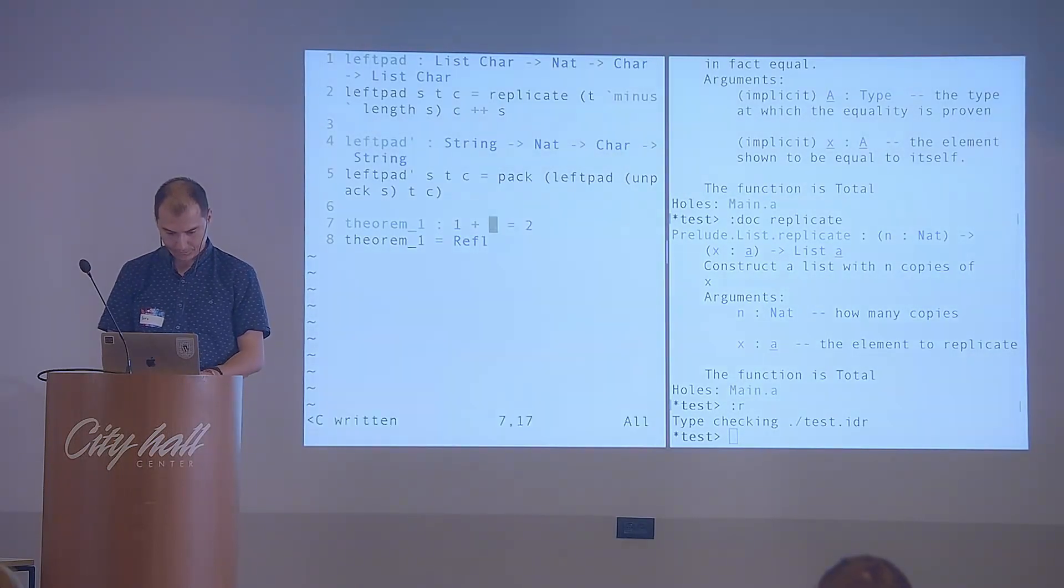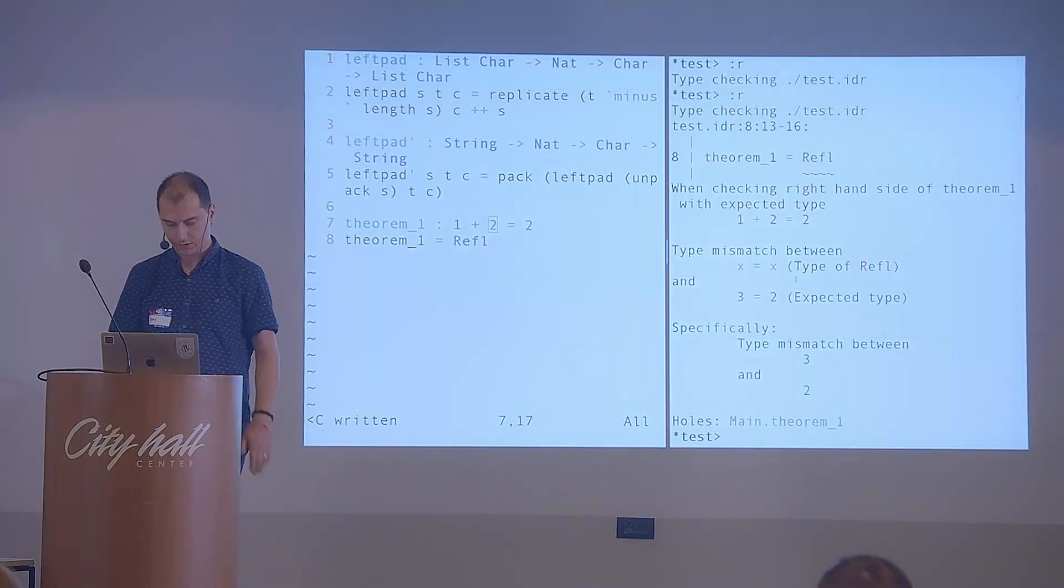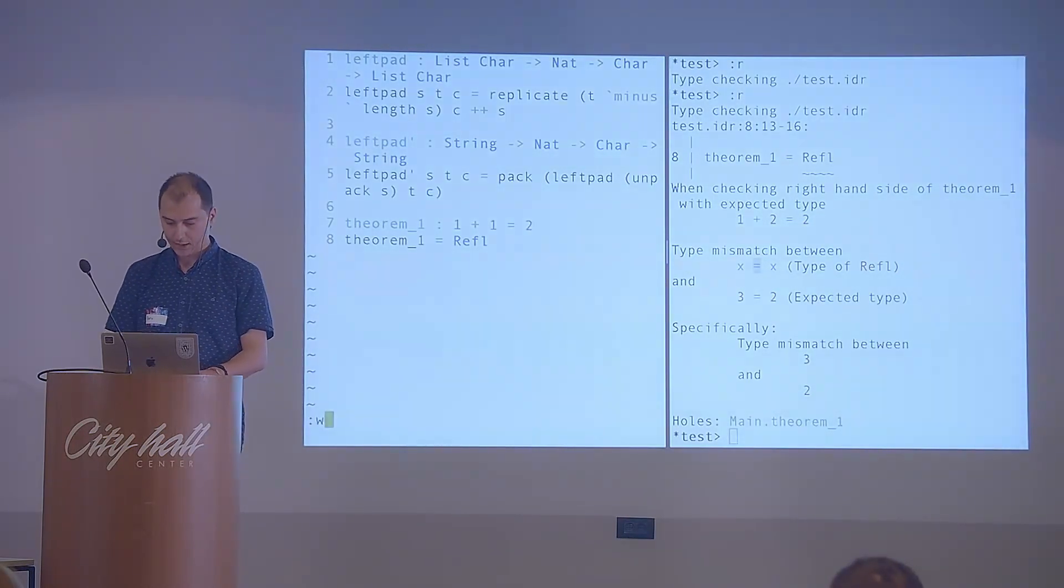That's interesting. So, let's try to break it. Does 1 plus 2 equal 2? No, it will complain. It will tell you that you tried to use reflexivity on 3 equals 2. But reflexivity really expects on the equal sign, both the left and the right side, to be the same. So, we can't break that. It didn't pass the type checking, so your proof is not valid.